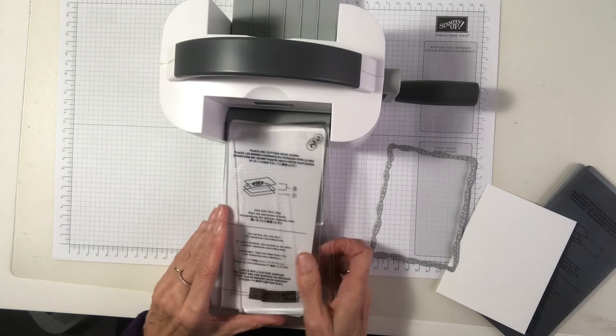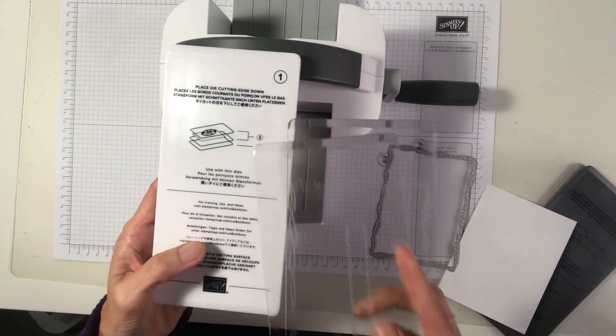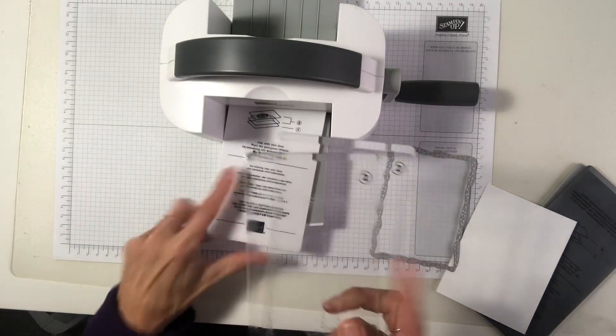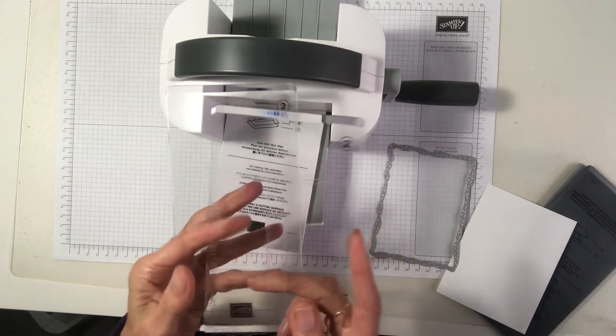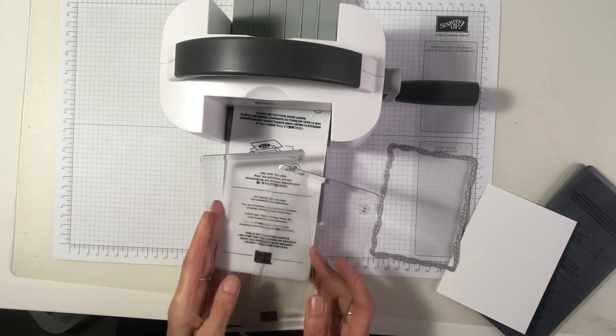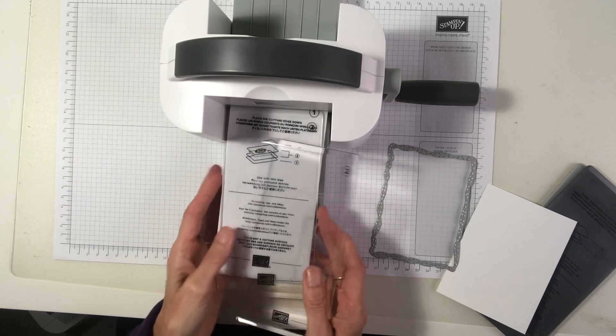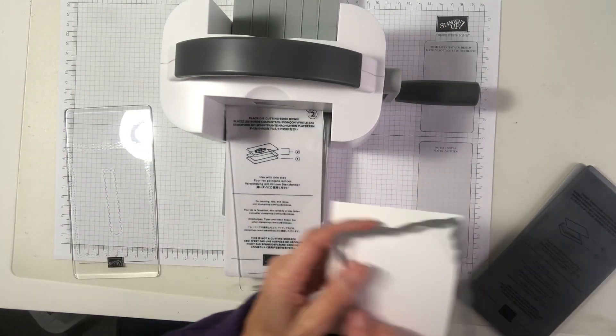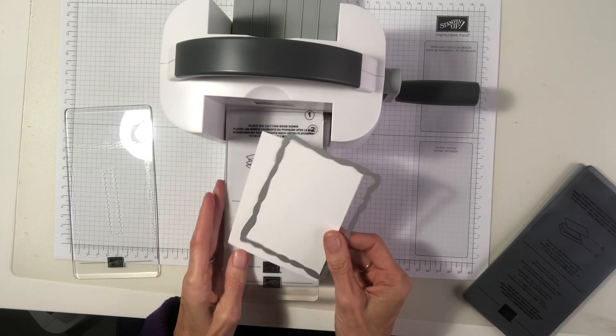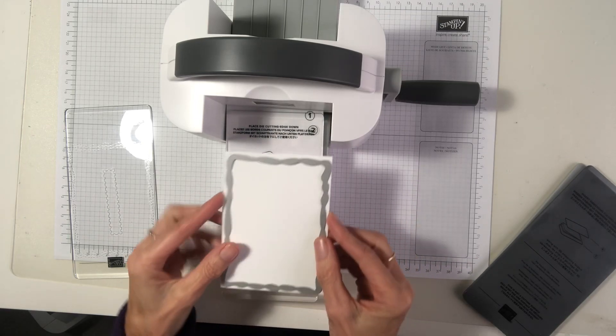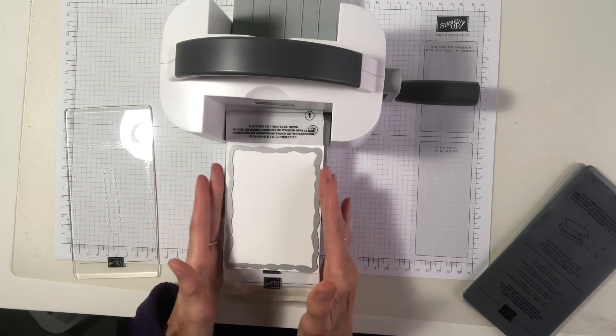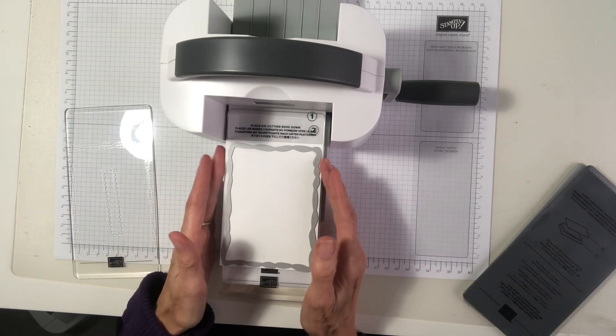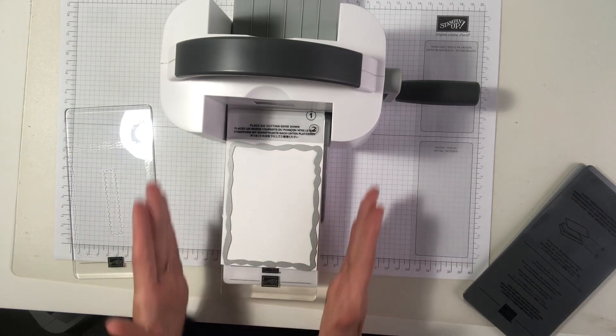So any dies or any of the mini embossing folders will fit through that gap. So if we follow the numbers, you're going to use a number one plate and the ones with number two. So let's bring them, put them in place here. Add your card. Now you want to make sure that your card and your die fits neatly on your plate. I've cut it to size for this so that it will run through.